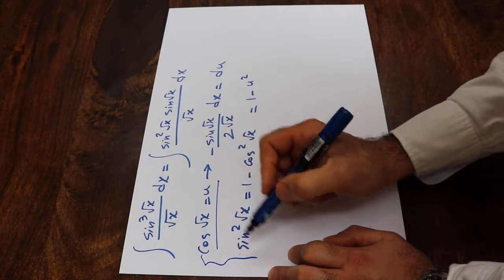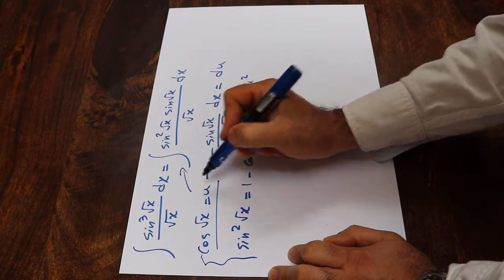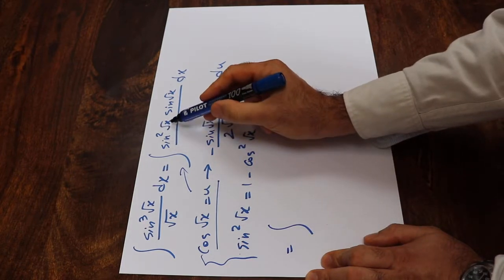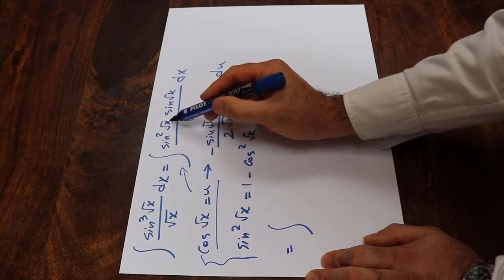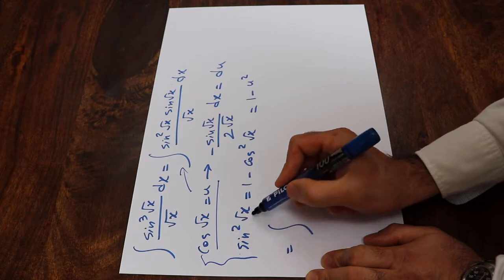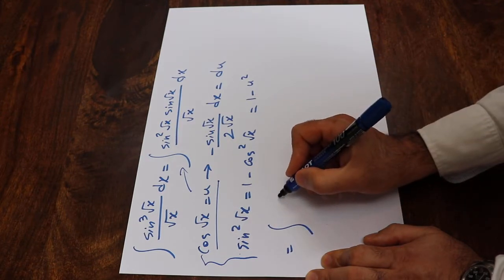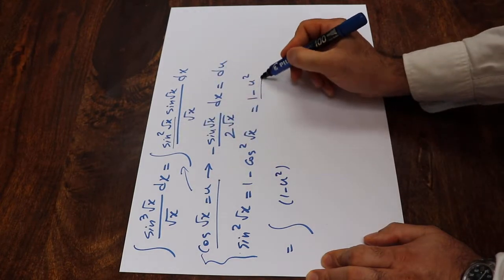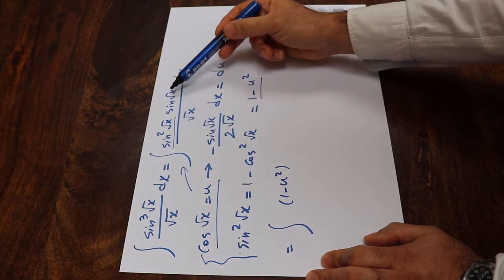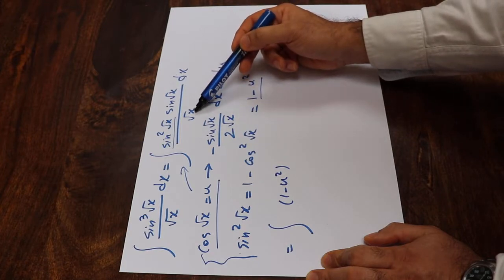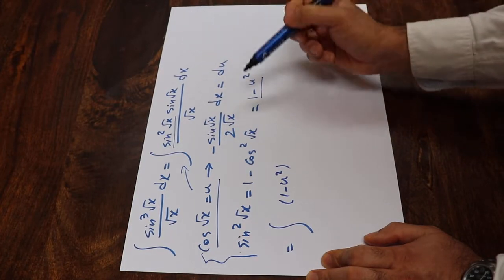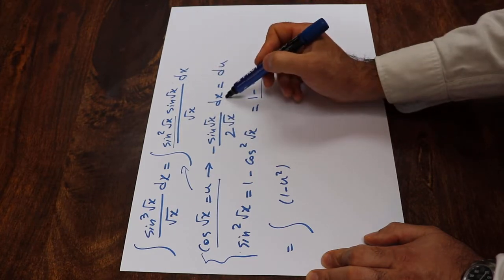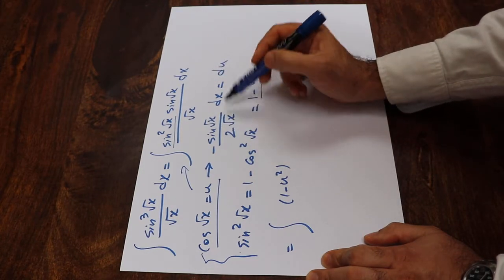So here all you need to do is substitute these expressions into this integral. That integral will be equal to: instead of sine squared of square root of x I write 1 minus u squared, and instead of sine of square root of x divided by square root of x times dx, I can write minus 2 du.